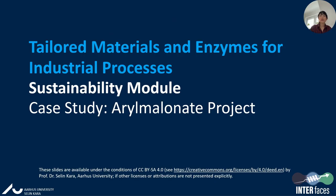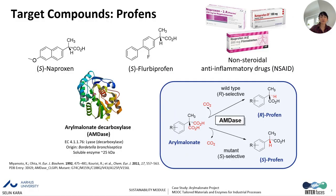Hello everyone. Today I would like to introduce you to a case study, a real manonate project. The results I'm going to show you are part of a PhD thesis. The target compounds that we would like to synthesize are profens — specifically S-naproxene and S-carbuprofen, as seen in the slide. We might know these compounds as painkillers for daily use, and they are also known as non-steroidal anti-inflammatory drugs.